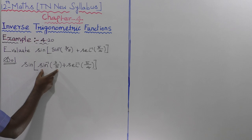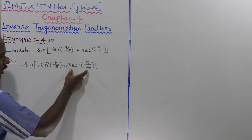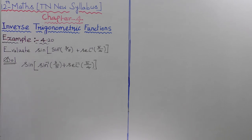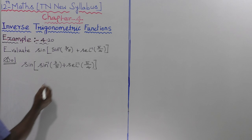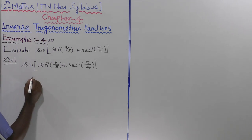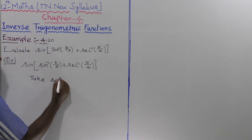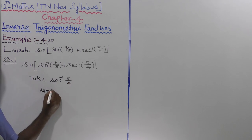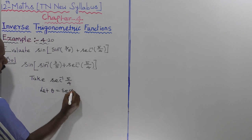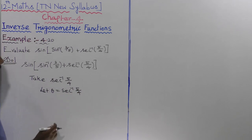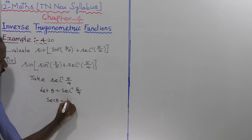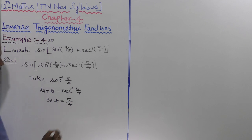This one is sine inverse of sine theta, so this one is eligible. This one is secant theta, also comparable to sine inverse of sine theta. Then using the formula: sine of sine inverse equals theta. Let us take secant inverse of 5 by 4. Let theta equal to secant inverse of 5 by 4. Then, taking secant theta to the left side, secant theta is equal to 5 by 4.